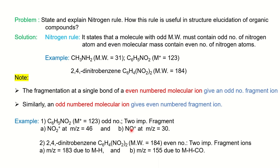Similarly, another example: with an even molecular mass, the two important fragmentation ions should have odd numbers. You can notice one is 183 and another is 155 — both are odd. 183 is obtained from 184 due to loss of 1 hydrogen (M minus H), which is an important fragmentation ion in case of even molecular mass. The other is M minus H followed by loss of CO, giving m/z 155.